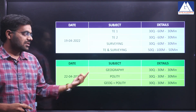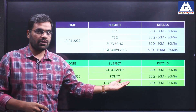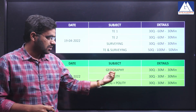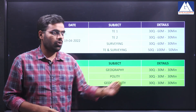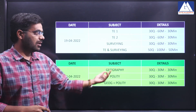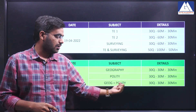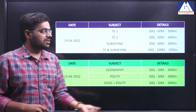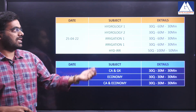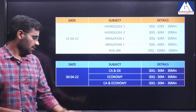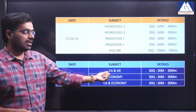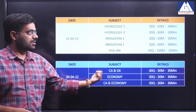Next, GS will be explained. The GS pattern will follow the same format. On 22nd April 2022, Geography and Polity — in GS, each question carries one mark. So 30 questions, 30 marks, 30 minutes. In the same way, Polity follows the same format. Geography and Polity will also have a combination test. On 25th April 2022, Hydrology and Irrigation will be activated. On 30th April 2022, Current Affairs and Static GK Economy, along with a combo test.